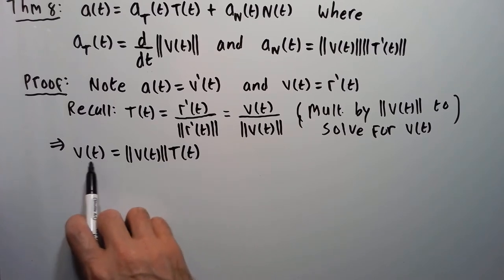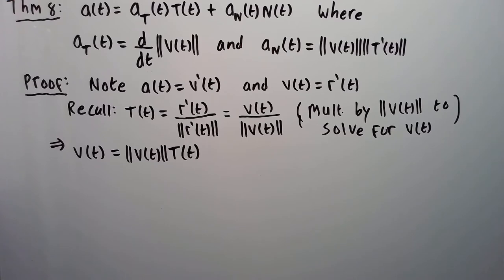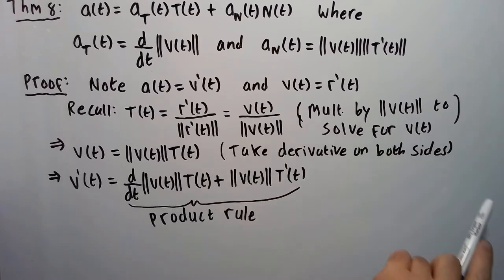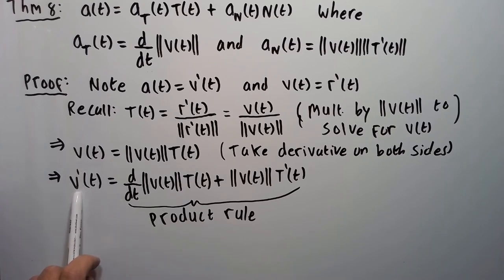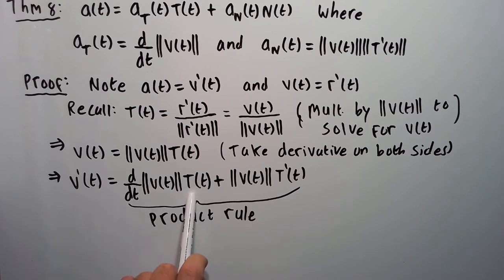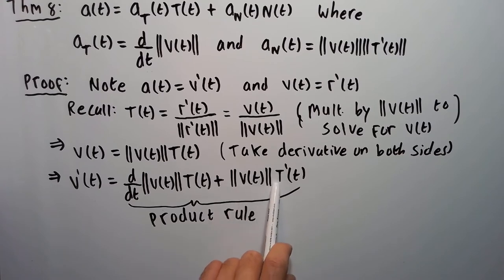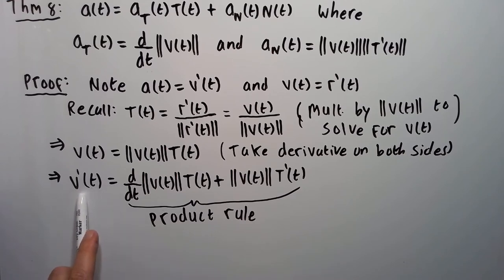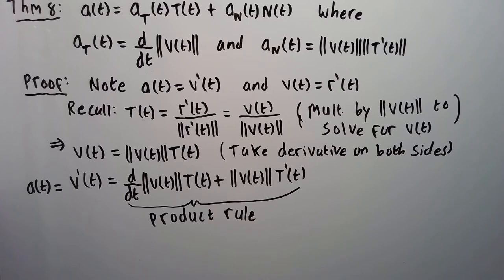Now we take the derivative with respect to t on both sides. On the right side, applying the product rule gives: derivative of speed times T, plus speed times T prime. The derivative of velocity is acceleration, so we can write: acceleration equals the derivative of speed times T plus speed times T prime.